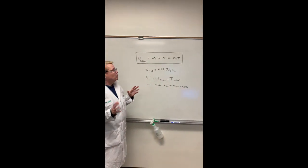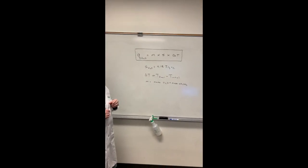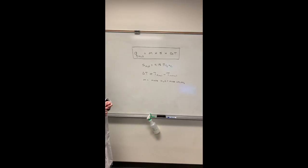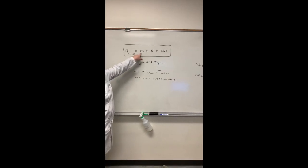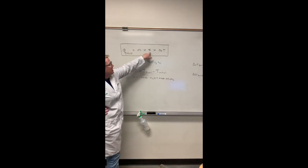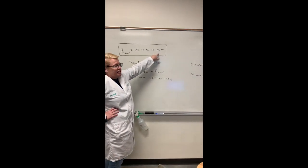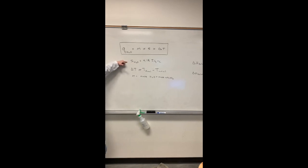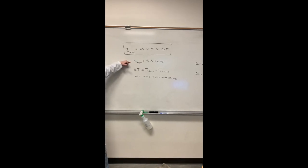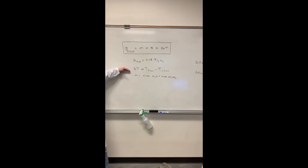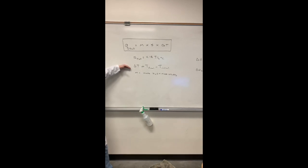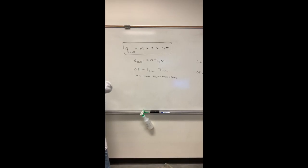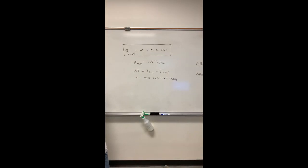The setup's pretty simple — we'll go through it in a minute — but the calculation is simply this: we're going to take the mass times the specific heat times the delta T. In this case we're going to use the specific heat of water, and remember that delta T is the final temperature minus your initial temperature inside the calorimeter cup.